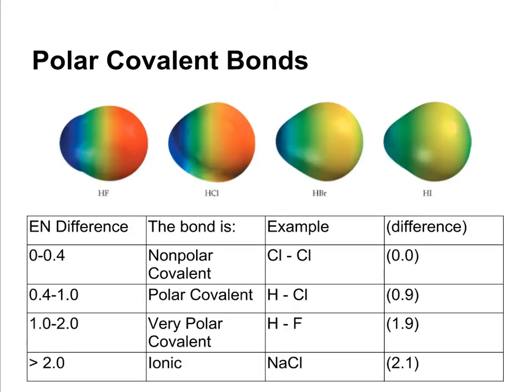The greater the electronegativity difference between two atoms in a covalent bond, that's going to result in that bond being more polar. So if the electronegativity difference is 0 to 0.4, it's a nonpolar covalent bond and the electrons are shared fairly equally.